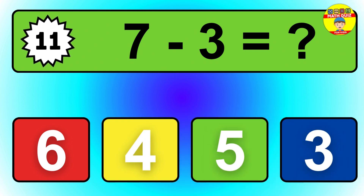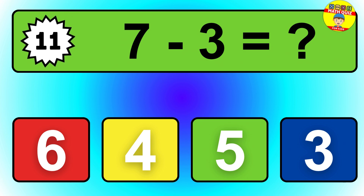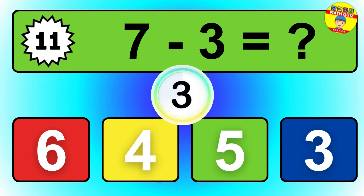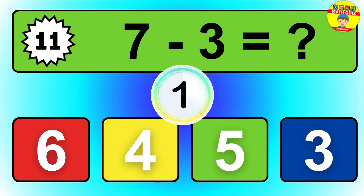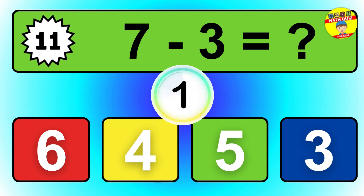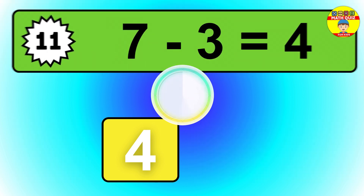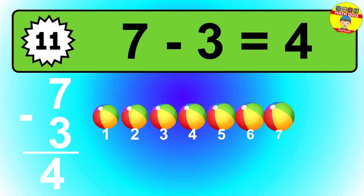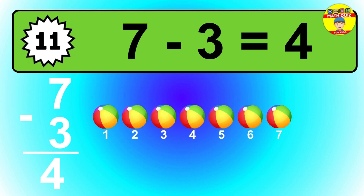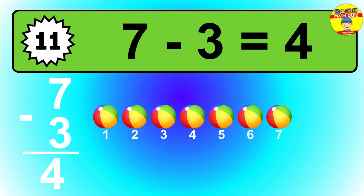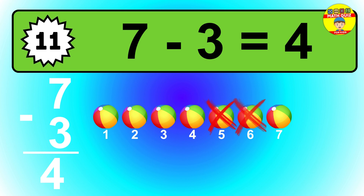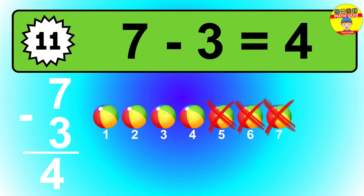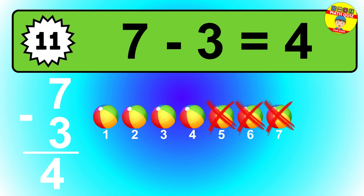Question 11. 7 minus 3 equals what? So the answer is 7 minus 3 is 4. Let's count it: 1, 2, 3, 4.